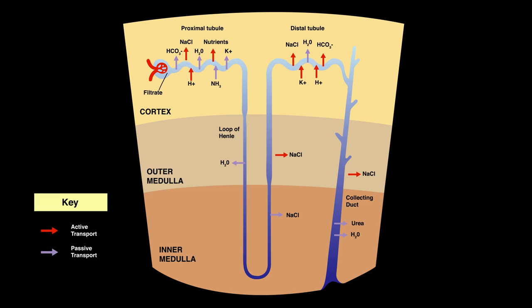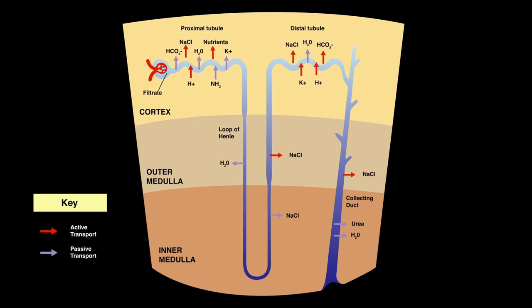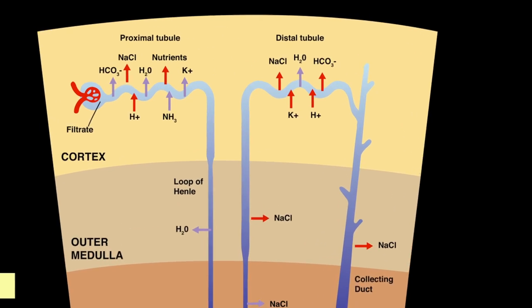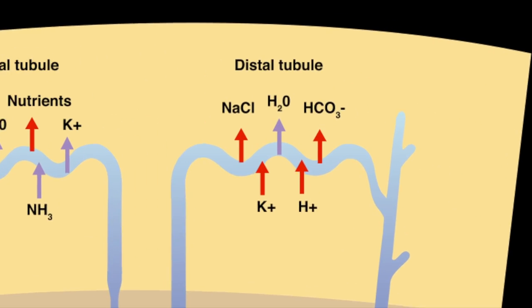That's where you're going to find the most active transport happening. Active transport uses tons of ATP, so you're going to look at that picture the teacher showed you, determine where all the active transport is happening, and the answer is the distal convoluted tubule.